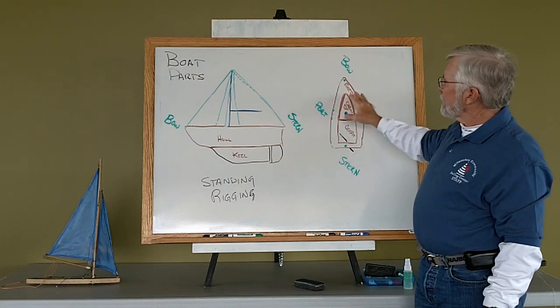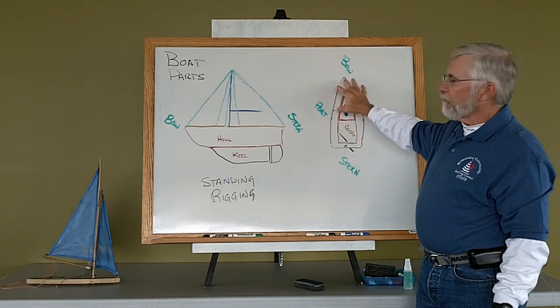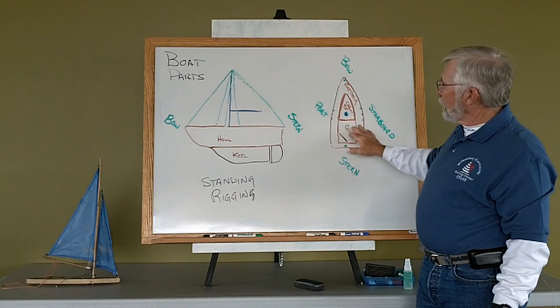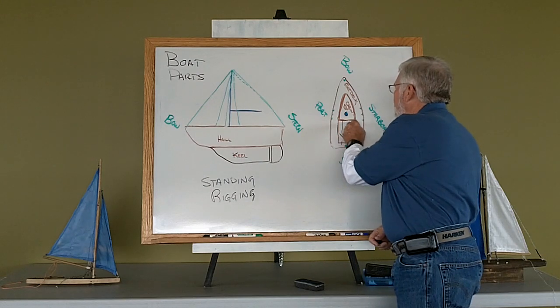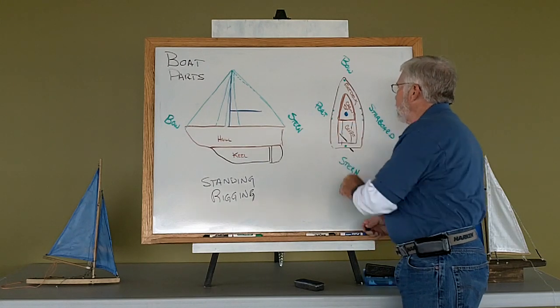Forward of the mast, we call that area the foredeck. Back where we sit, with our little benches, is our cockpit.